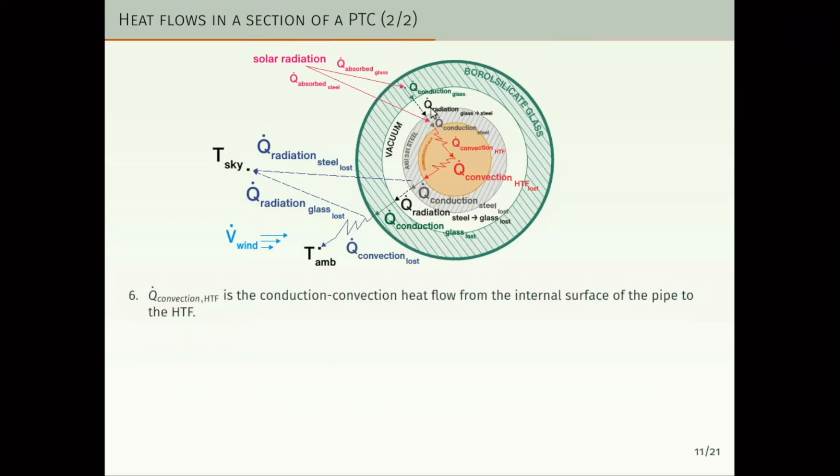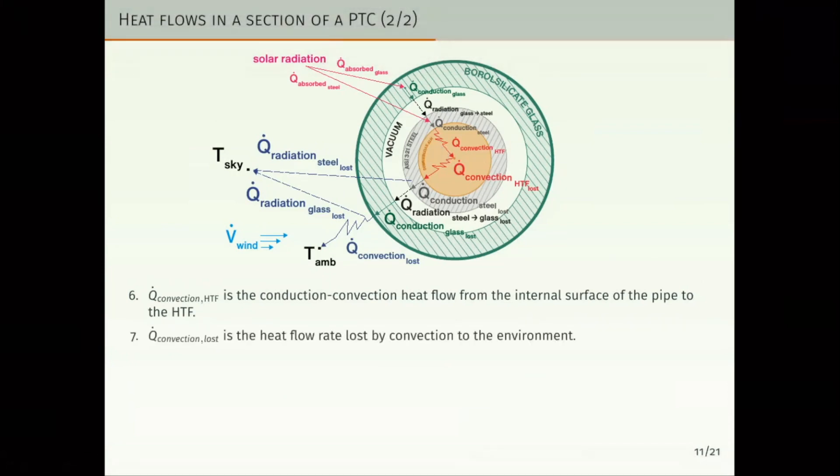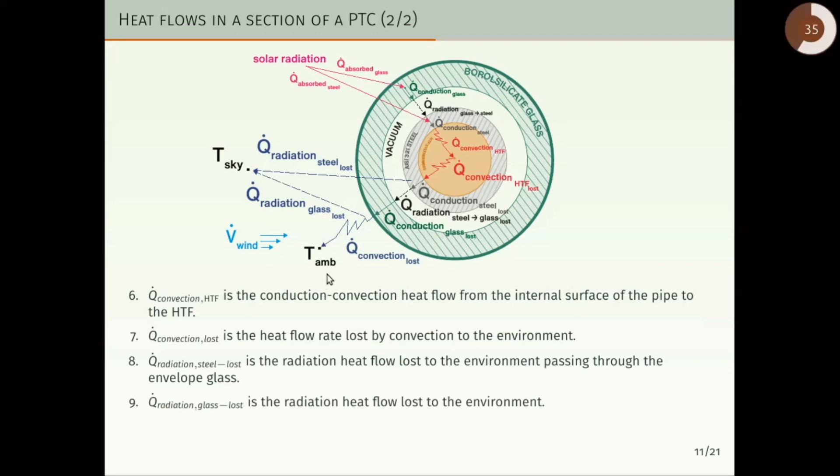Q dot convection HTF is the conduction convection heat flow from the internal surface of the pipe to the mean temperature of the bulk heat transfer fluid. The Q dot convection lost is the heat flow lost by convection to the environment. Q dot radiation steel lost is the radiation heat flow lost to the environment passing through the envelope glass. So, these are all the flows that we have considered.